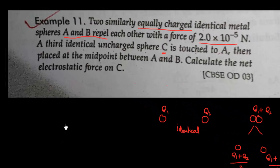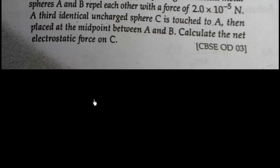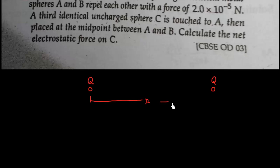For these two identical metal spheres, the charge will be divided equally. Now if a body has charge q and another is uncharged (zero), once they touch each other and are separated, the charge on each will be q/2 and q/2. Now coming to the question: suppose we have two charged bodies with charge q and q, at a separation equal to r.